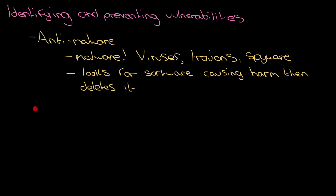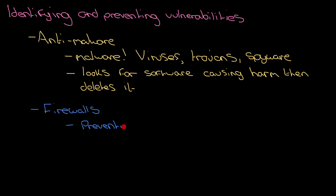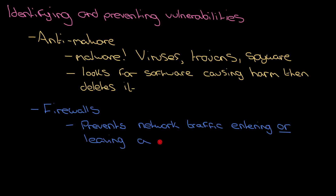Next, firewalls. These are a little bit trickier to explain, but firewalls can either be hardware or software — something that you can physically touch, or a program that just runs on a computer. What a firewall does is it prevents network traffic, so data, from entering and leaving a network.